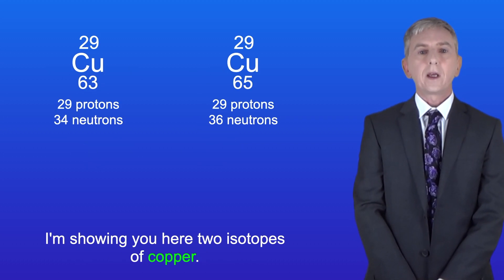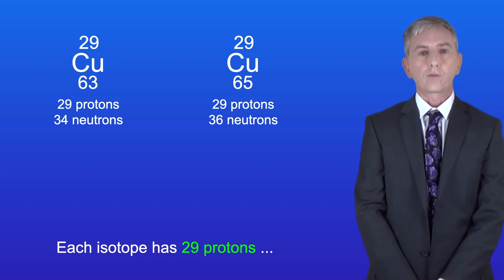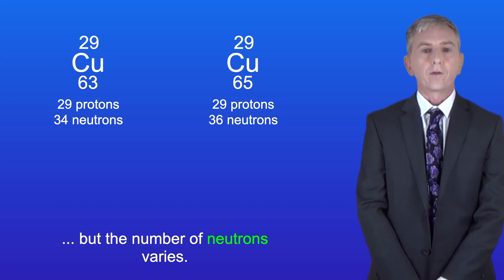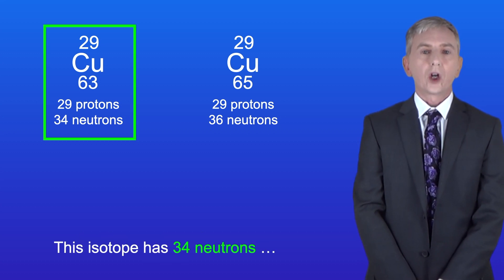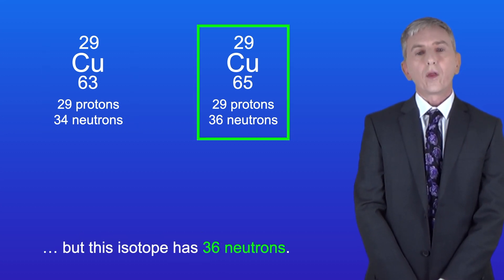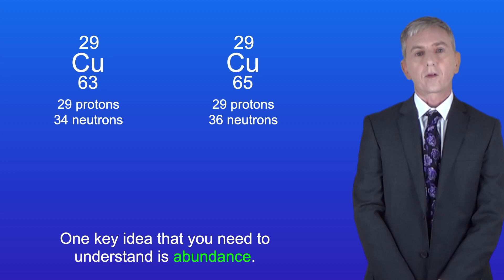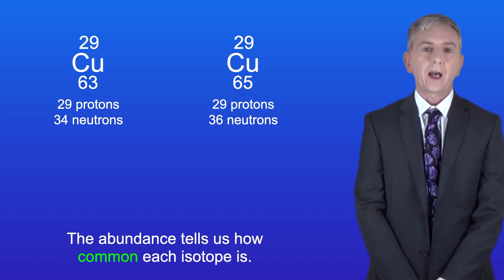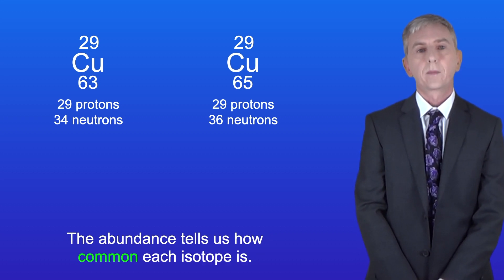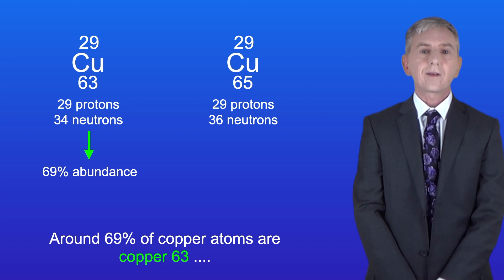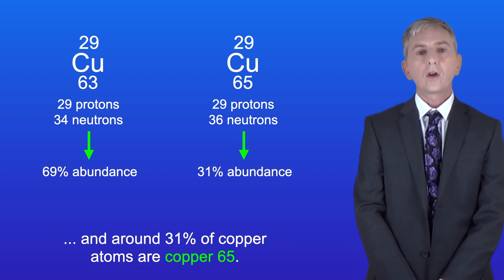I'm showing you here two isotopes of copper. Each isotope has got 29 protons but the number of neutrons varies. This isotope has 34 neutrons but this isotope has 36 neutrons. The abundance tells us how common each isotope is. Around 69% of copper atoms are copper-63 and around 31% of copper atoms are copper-65.